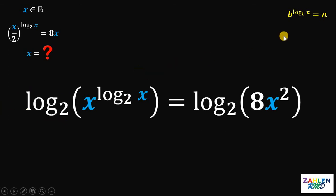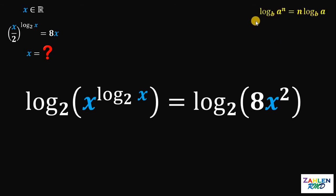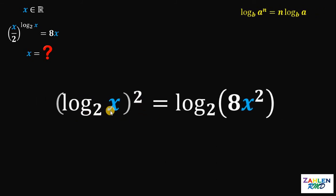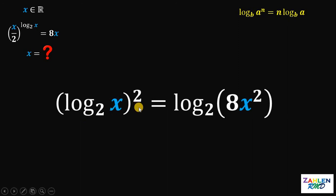Let's recall another property of logarithm: if we have logarithm of a raised to n to the base of b, it is equivalent to n times the logarithm of a to the base of b. Therefore, the left-hand side of our equation is logarithm of x to the base of 2, times logarithm of x to the base of 2, which is just logarithm of x to the base of 2, quantity squared.